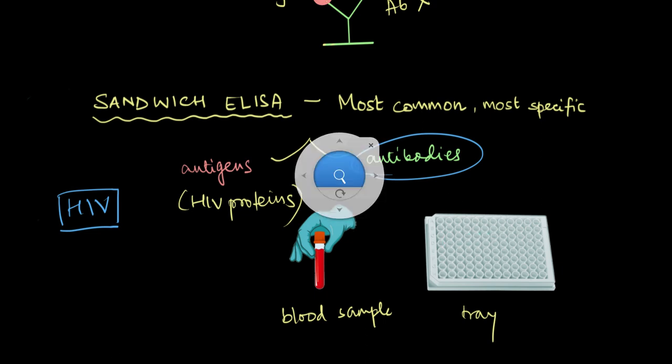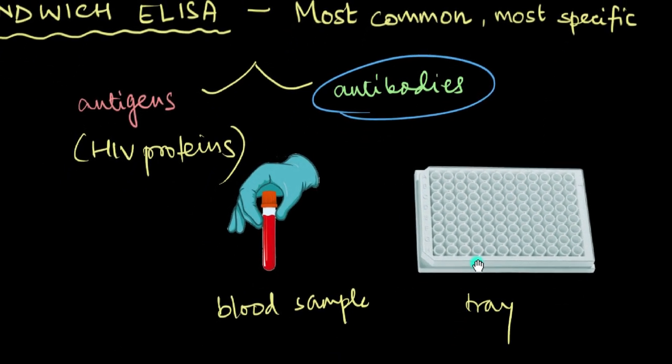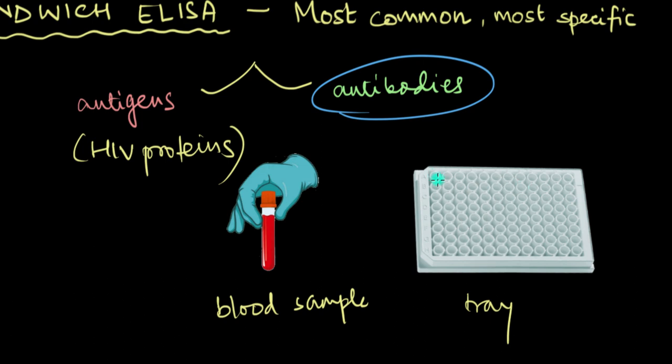And these tiny circles that you can see, let's zoom in a little bit so that you guys can see it. So these tiny circles that you can see inside the tray, these are called wells. Each of these tiny circles, they are called wells. Now let's zoom into one of these wells and see exactly what happens during ELISA.